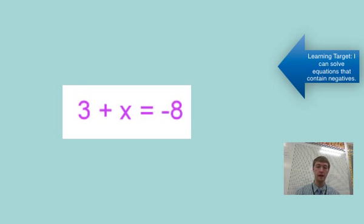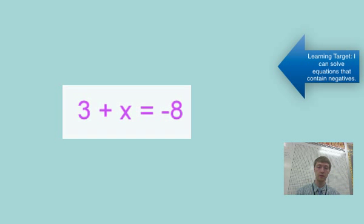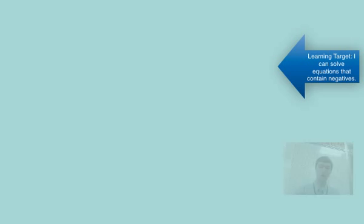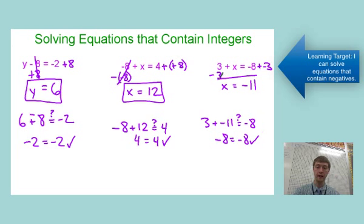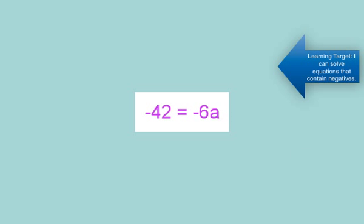Pause the video and try 3 plus x equals negative 8. Make sure you go back and fix what you did wrong. For this one, the opposite of addition is subtraction, so we have negative 8 minus 3. That's the same as negative 8 plus negative 3, which gives us negative 11—we're getting more negative. On the check step, plug in negative 11, and you should see the two sides become equal because 3 plus negative 11 is negative 8.